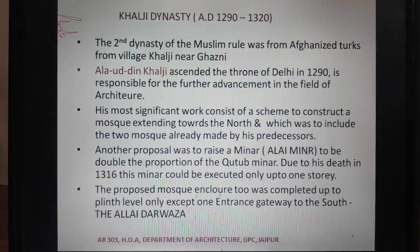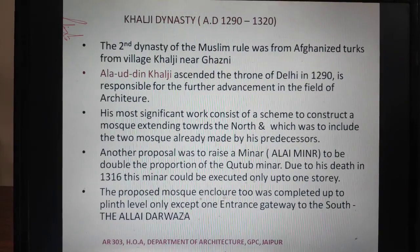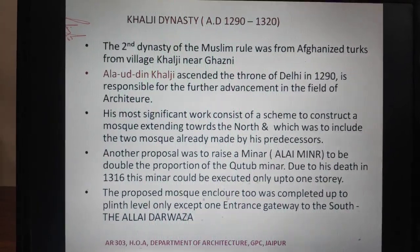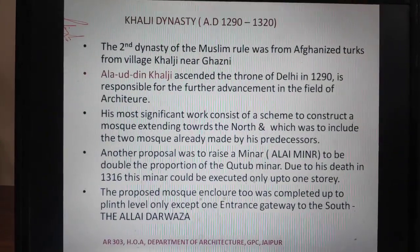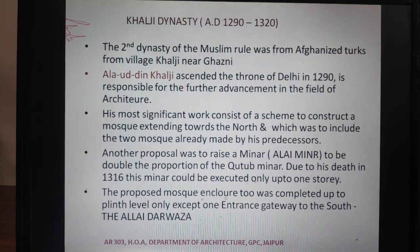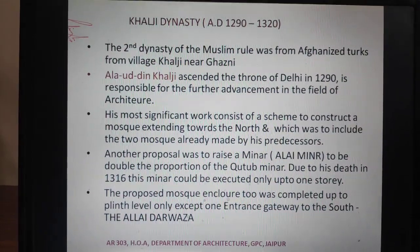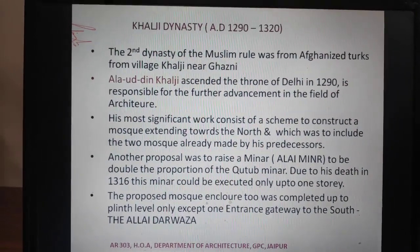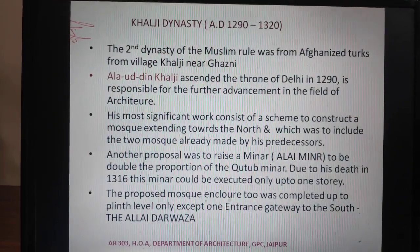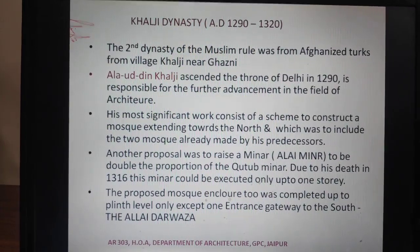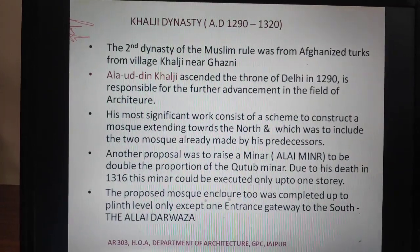The Khalji dynasty in India spans 1290 to 1320 AD. This is the second Muslim rule in India. The rulers were Turkish people from Khalji village in Ghazni, which is why we call it the Khalji dynasty. The most active ruler in building art is Alauddin Khalji, and we will explain the work they have accomplished.